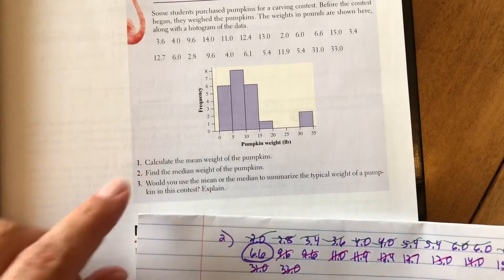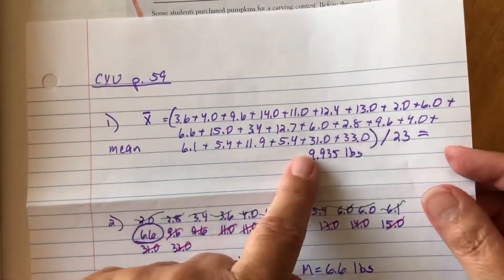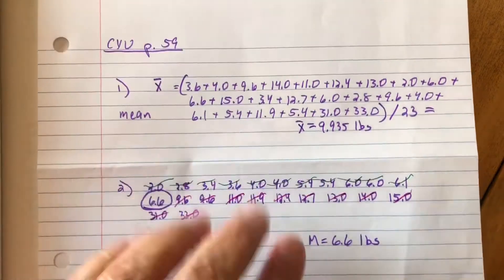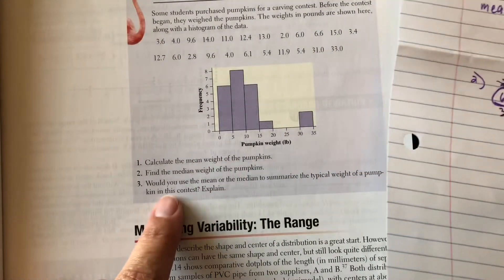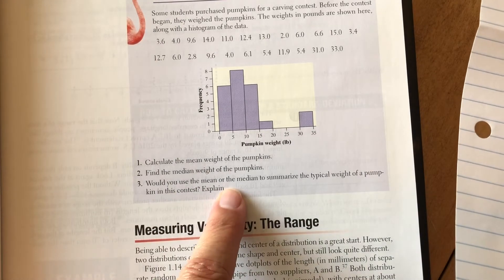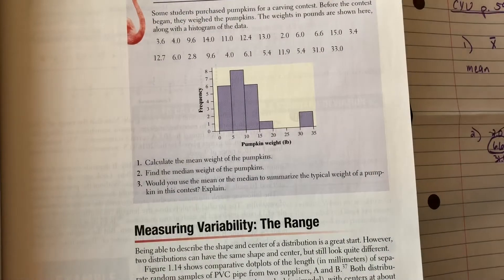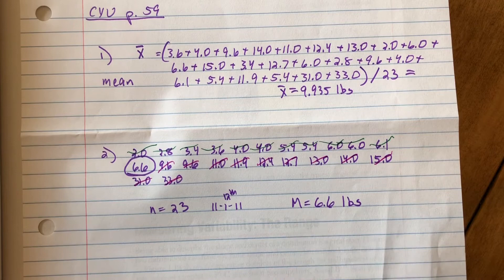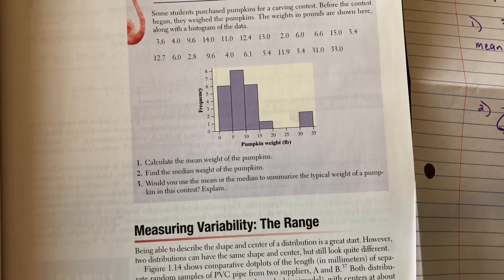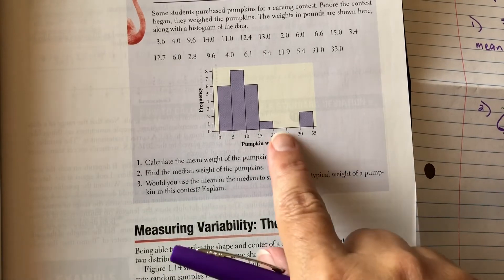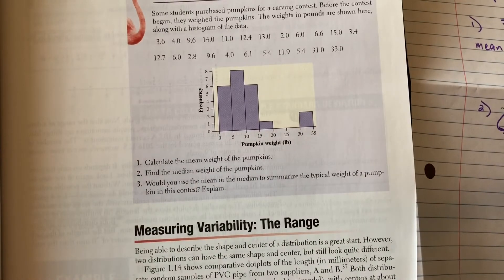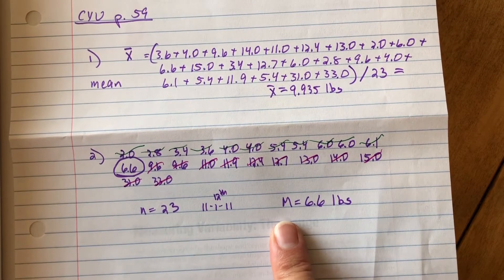So I found my median. My mean is a little higher than my median. My little x-bar for mean, capital M for median. And the next question says, would you use the mean or the median to summarize the typical weight of the pumpkins in this contest? So if I'm going to pick whether I'm going to say the typical pumpkin weighs either 9.9 pounds or 6.6 pounds, all depends on the shape of the distribution. So I'm glad they gave us a histogram. The shape is skewed, it's skewed right. A little gap right there could be some potential outliers, single peak. But it is right skewed, it is skewed. So whenever we have a skewed distribution, we're going to use the median for the typical value.